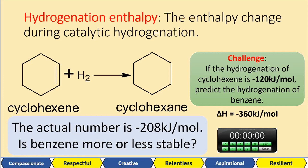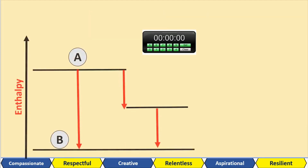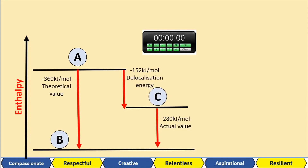Have a think — does this mean that benzene is more or less stable? Here I've got an enthalpy diagram with two locations: location A and location B, and also location C. From location A to location B, the enthalpy released is minus 360 kilojoules per mole — that's your theoretical value. From location C to location B, that's minus 280 kilojoules per mole — this is the actual value. From location A to location C, that's minus 152 kilojoules per mole — that's your delocalization energy.